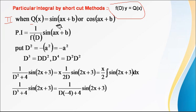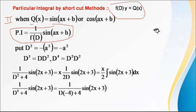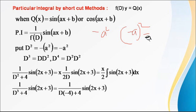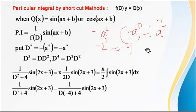In the case of either sin or cos only, we use this method — not for all trigonometric functions. We already studied the exponential function e^(ax) case, where we simply replace D with the coefficient of x. For sin or cos, we replace D² with minus a², not minus (a)² as a whole square. So minus 2² means minus 4, minus 3² means minus 9, and so on.